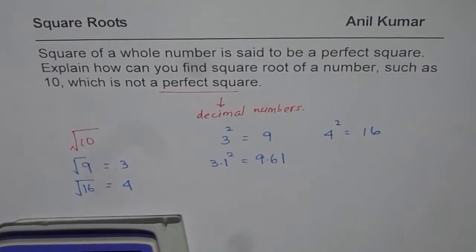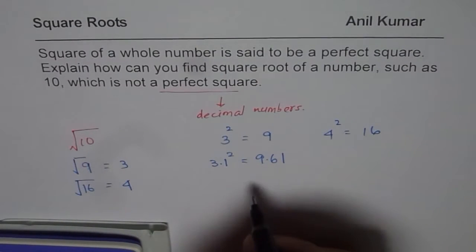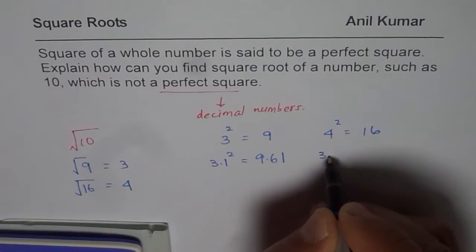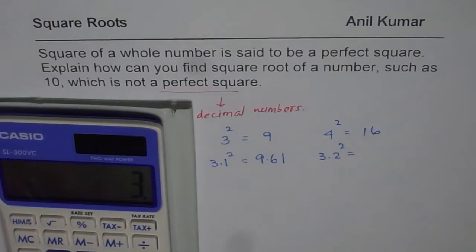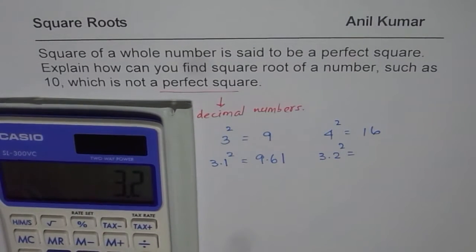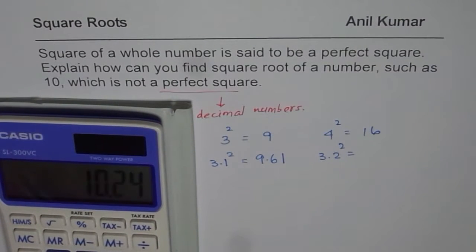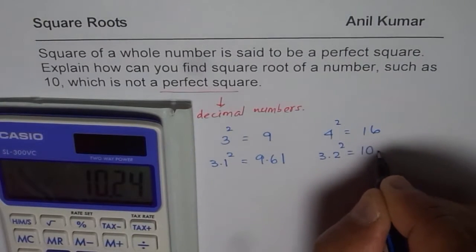Now, 9.61 is close to 10, but still far away. So we can now try what is 3.2 square? Now, 3.2 square means, let us do it. 3.2 times 3.2 equals to 10.24.